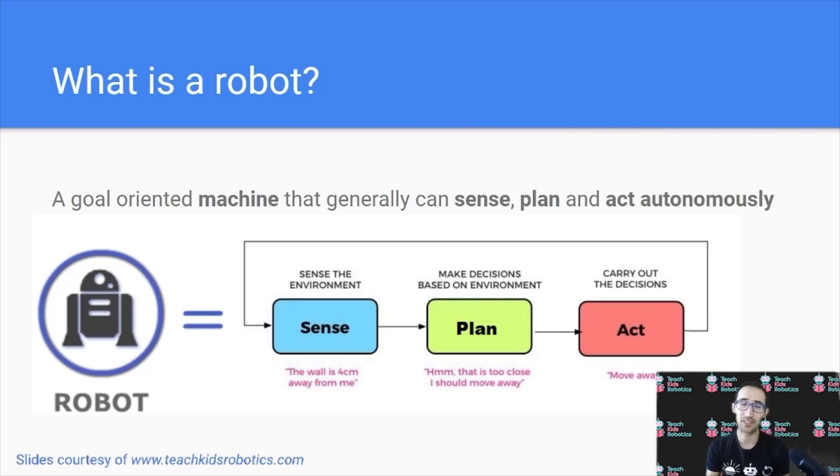When we say autonomously, this refers to the ability for a robot to act without human intervention of any kind.